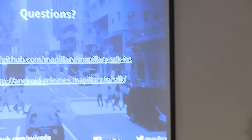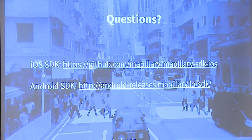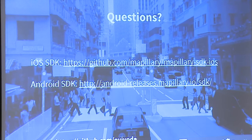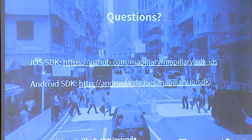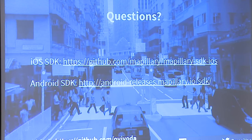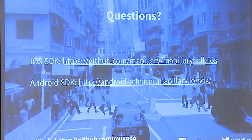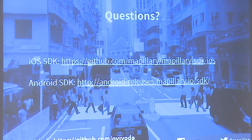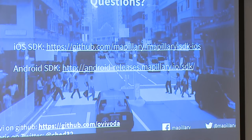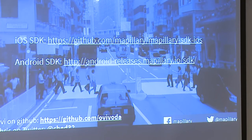In conclusion, here are the links. You can go on GitHub to get access to the iOS SDK, and you can download the Android SDK at this link as well. Ovi is on GitHub, I'm on Twitter, and follow Mapillary on Twitter for our latest news — hopefully we'll have more announcements along these lines in the near future.